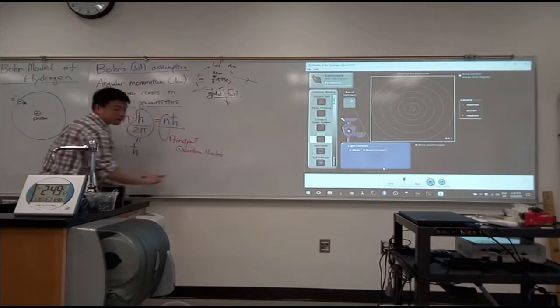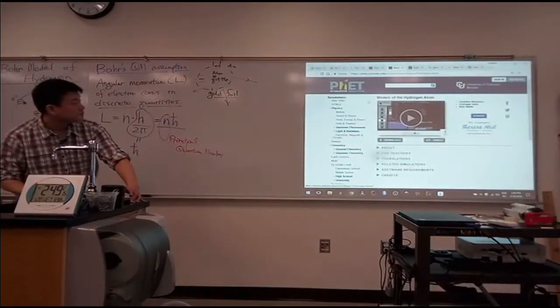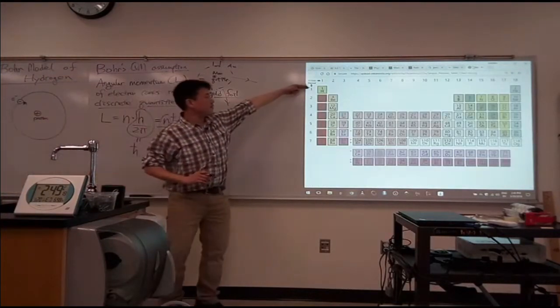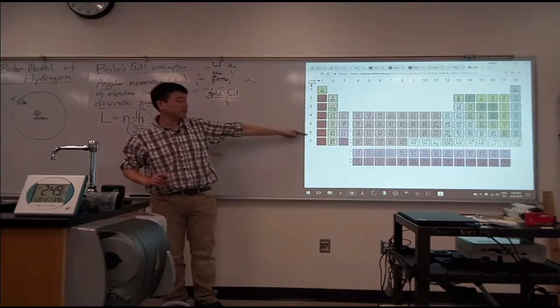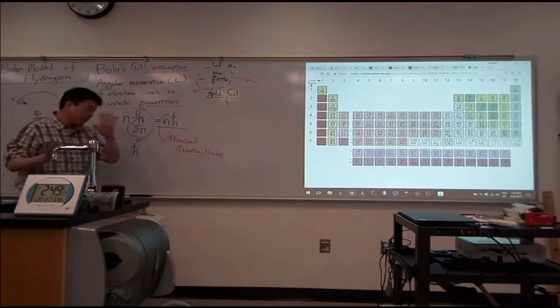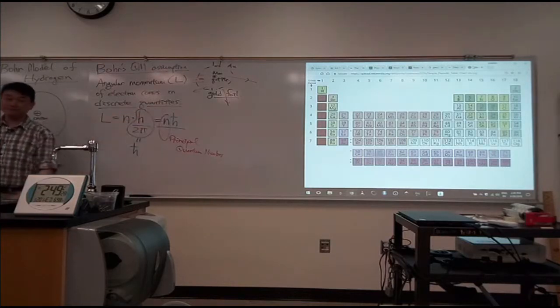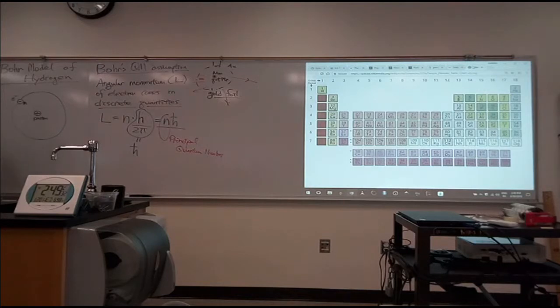And when you look at the periodic table, this is the n. One, two, three, four, five, six, seven. Now, the little part that Bohr got wrong was that you could have n equals one and the angular momentum be equal to zero. So we'll get to that.